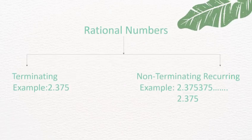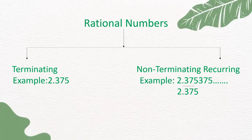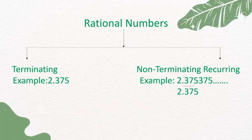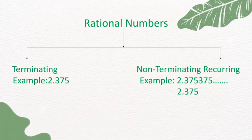Rational Numbers are of Terminating type or Non-Terminating Recurring type. For example, 2.375 is a Terminating type of Rational Number. And 2.375375... or 2.375 bar are examples of Non-Terminating Recurring Rational Numbers.